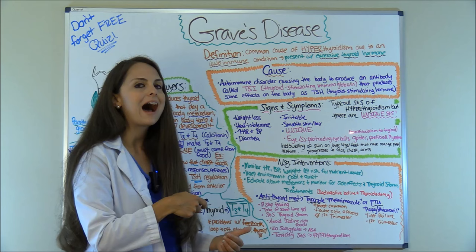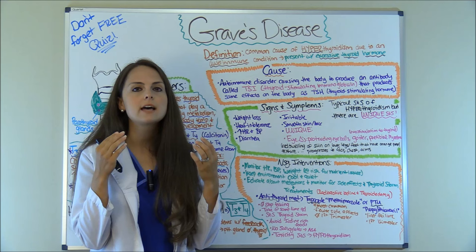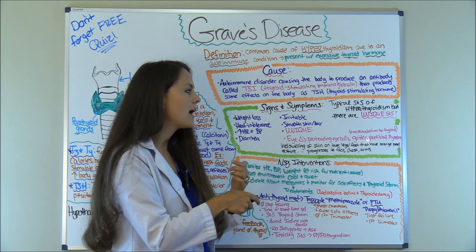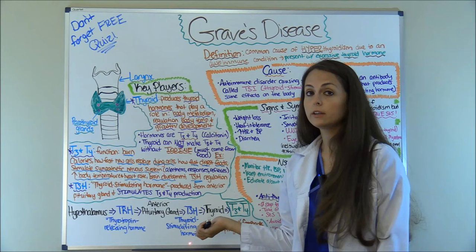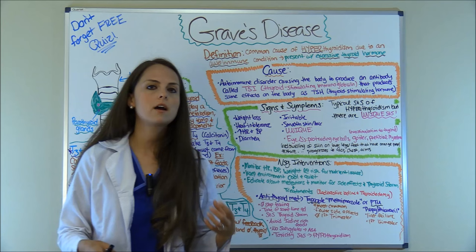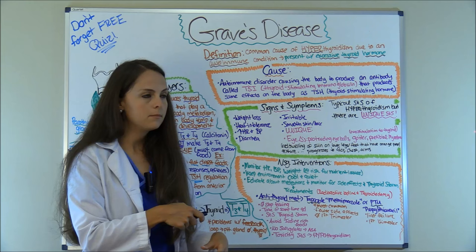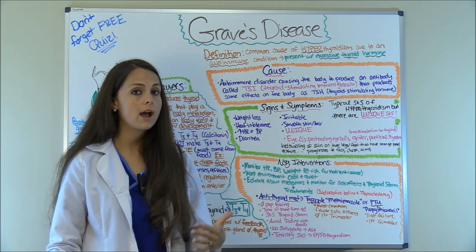They're going to have eye changes — not all patients with Graves' Disease, but some of them will. They have protruding eyeballs where the eyeballs are opened up really large, and it looks like they have a constant surprise look on their face. They can also have a goiter of the neck, and the reason for this is due to overstimulation of the thyroid gland. Remember, TSI is causing the thyroid gland to constantly produce T3 and T4, so you're going to start getting swelling of the thyroid gland that will look like a goiter. Also, they can have pre-tibial myxedema, which is red swelling of the skin on the lower legs and feet with an orange peel texture, and this can progress to the face, chest, and arms.